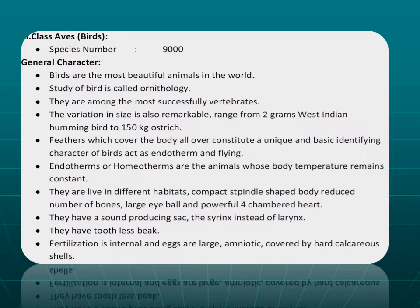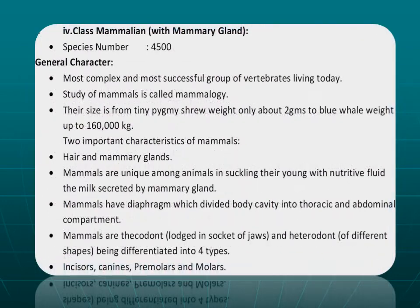Fertilization in birds is internal, and their eggs are large, amniotic, and covered by hard calcareous shells. Nesting and molting are also observed. Now let us discuss class Mammalia. Mammalia are characterized by mammary glands. There are about 4,005 species of mammals found. The study of mammals is known as mammology. They are the most complex and most successful group of vertebrates living today. Two important characteristics unique to mammals are hair and mammary glands.